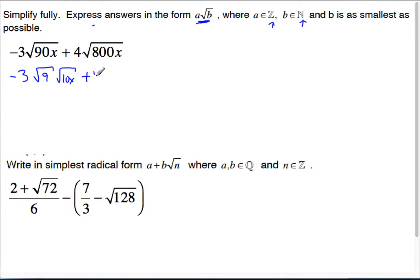Then the 4 stays. The 800 can be broken down into 400, which is 20 times 20. That leaves us with 400 times 2 and x. 400 times 2 is 800.